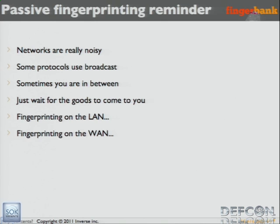On the LAN, there is DHCP, which is a broadcast protocol that you can use for fingerprinting — I'll talk about that in the next slide. There is also multicast DNS, iTunes, and all that stuff, which is very verbose and noisy, and helps you identify software or hardware. On the WAN, you could do fingerprinting with a honeypot and see kind of the internet noise. It's possible to do that passively on the WAN as well.